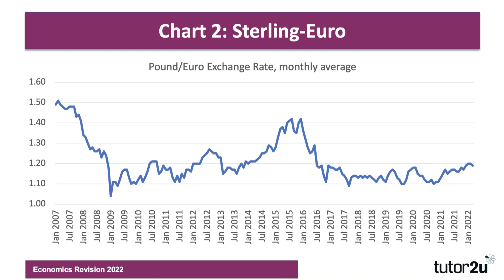Likewise, if you look at sterling against the euro — the UK is now outside the single market, and we have a free-floating exchange rate. This is the value of the pound against the 19 member nations of the European Monetary Union. The pound fell sharply in 2007, recovered ground, then fell again in 2016. Recently it's been trading at about $1.15, though it's been appreciating a little. The pound is still lower than it was 5 or 6 years ago.